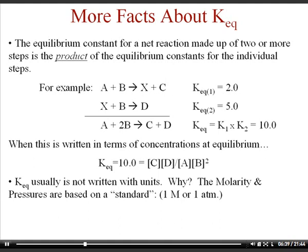K is never written with units. Basically, whenever you have a concentration, it's compared to a standard concentration of one molar; or if you have a pressure, it's based on the standard pressure of one atmosphere. Technically, you're taking a concentration divided by one molar so the units cancel out, or dividing a pressure by one atmosphere before plugging the number into the equation. So don't worry about K units — they don't have any.